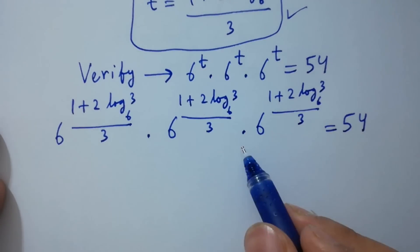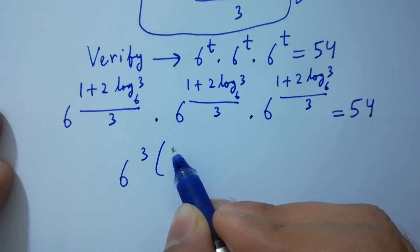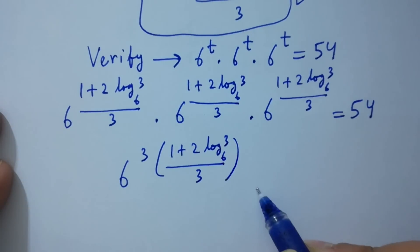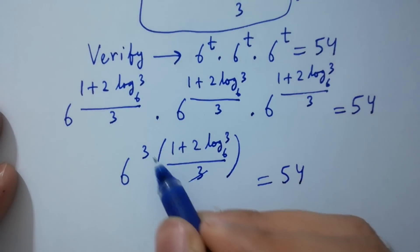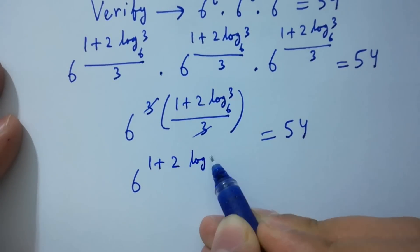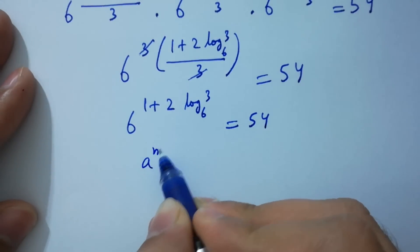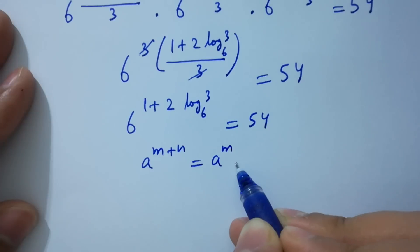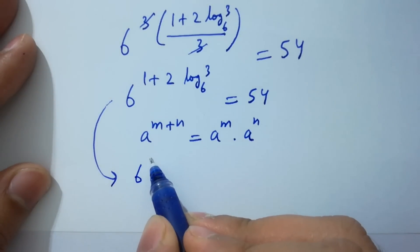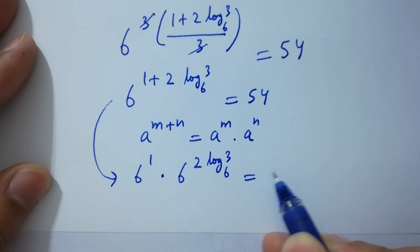Since the bases are the same, we add the powers: 6 to the power of 3 times (1 plus 2 log 3 to the base 6) over 3. The 3s cancel, giving 6 to the power (1 plus 2 log 3 to the base 6) equals 54. Using a to the power (m plus n) equals a to the power m times a to the power n, it becomes 6 to the power 1 times 6 to the power 2 log 3 to the base 6 equals 54.